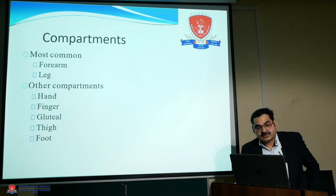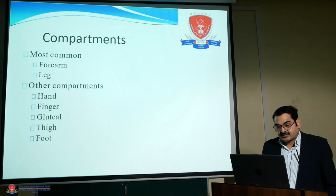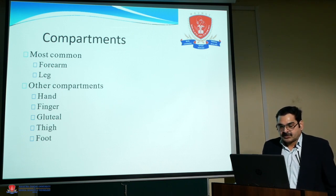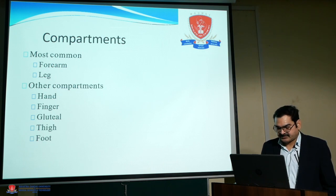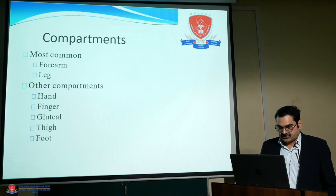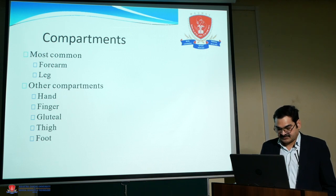The compartments most commonly involved in compartment syndrome are the forearm and the leg. Other compartments that can be involved include the hand, fingers, gluteal region, thigh, and foot — all osteofascial compartments that could be involved with certain fractures.